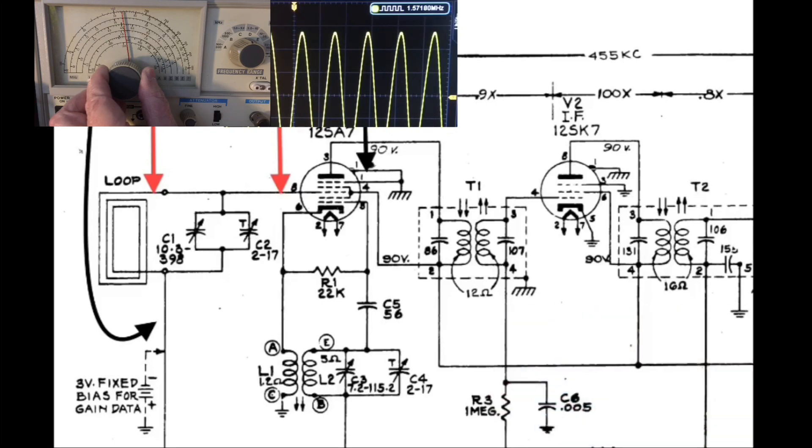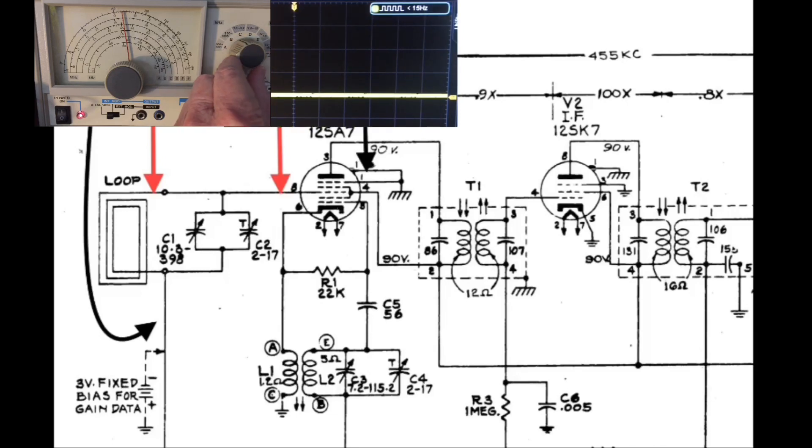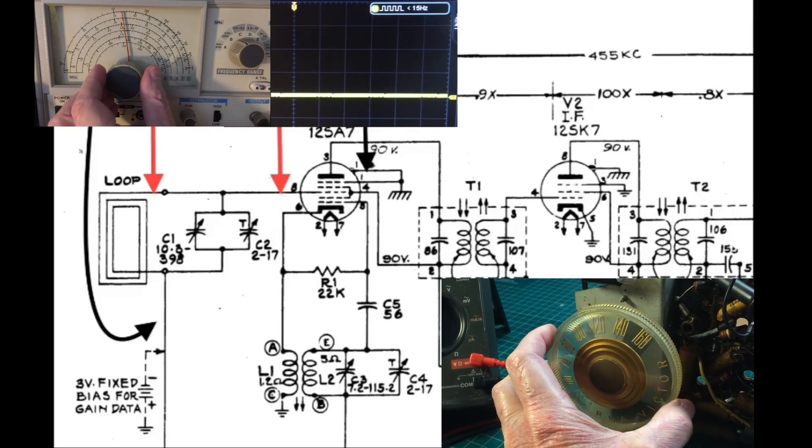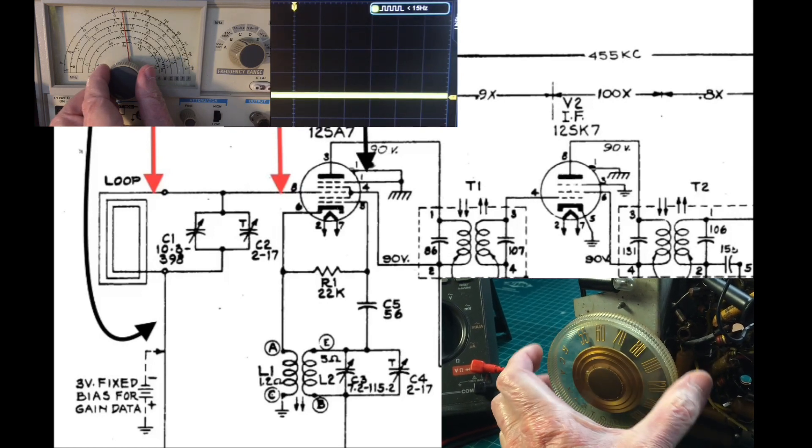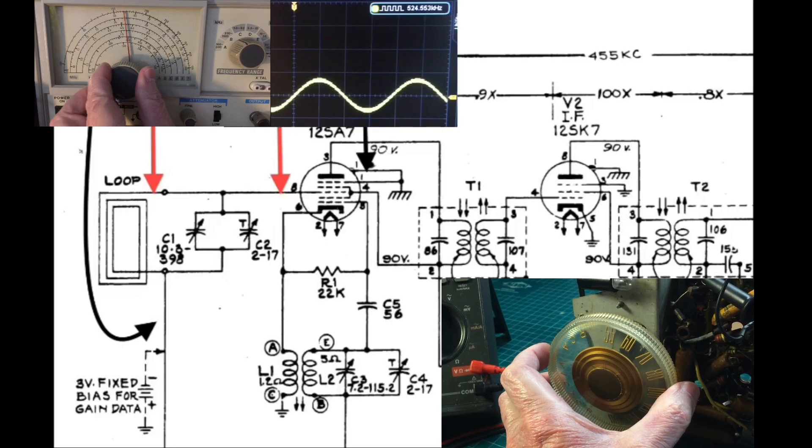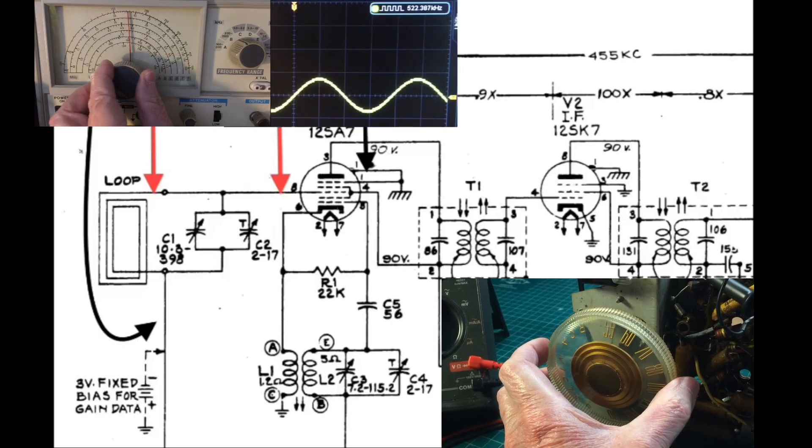Let me flip over to 540 kilocycles. Change the tuning condenser here on the radio. And you can see here where we're peaking.